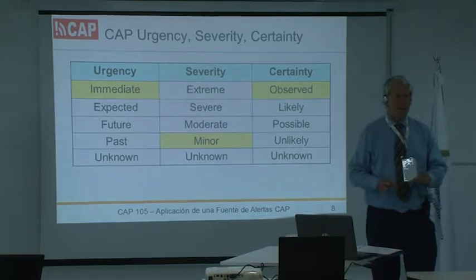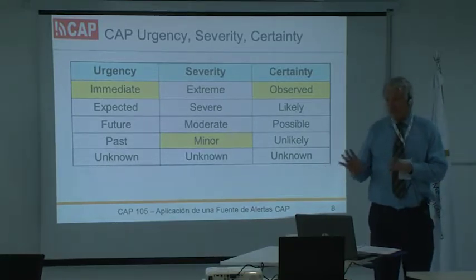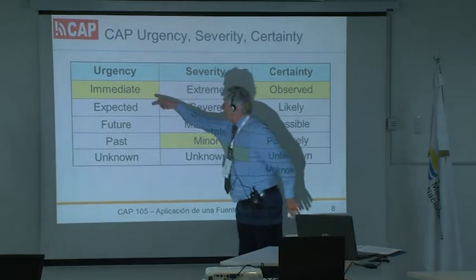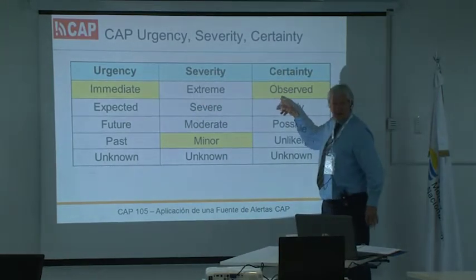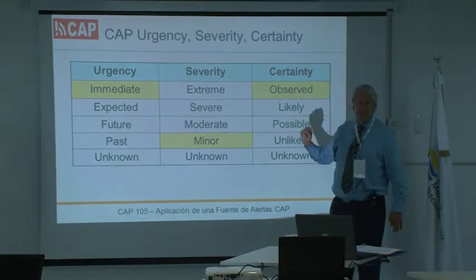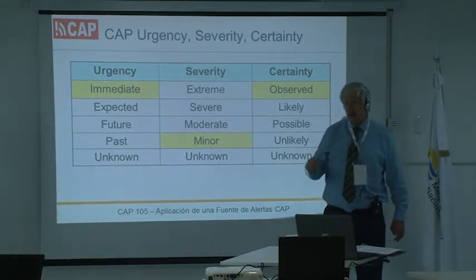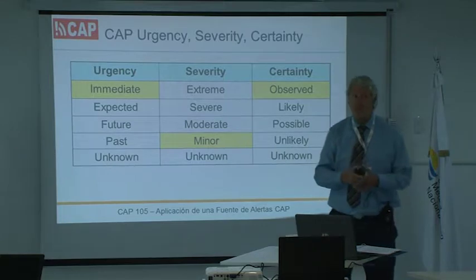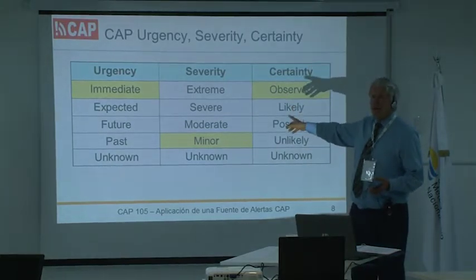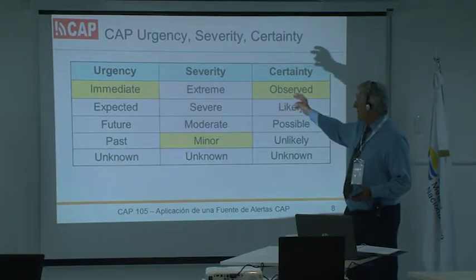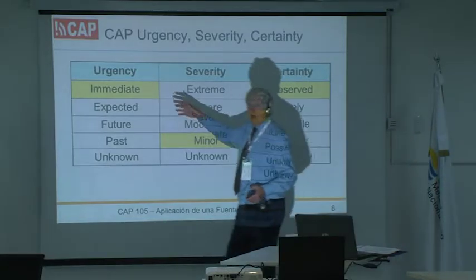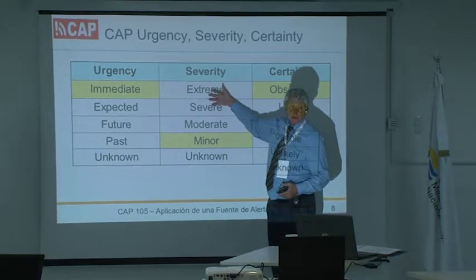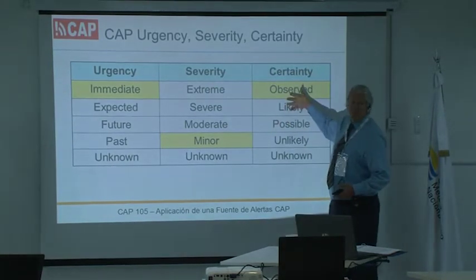The top two levels in all of these has a special indication for many countries — that's when you do sirens, that's when you go to every cell phone in the alerting area. It's rare: less than one in a thousand of your CAP alerts have top urgency, severity, and certainty. That means: I need you to act within the next hour, people will be killed — these are life-critical — and we're at least 50 percent certain.